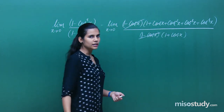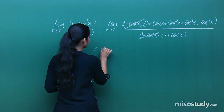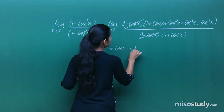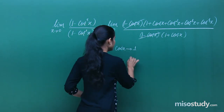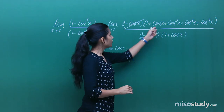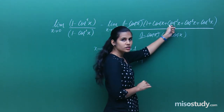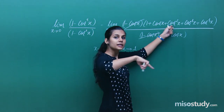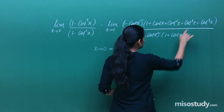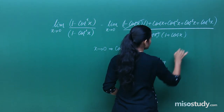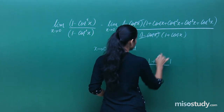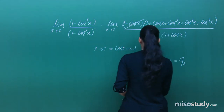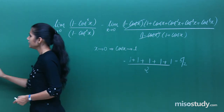Very clearly the (1 minus cosx) factor gets cancelled. As x approaches 0, cosx approaches 1. So the limit becomes (1 + 1 + 1 + 1 + 1) upon (1 + 1), which is 5 by 2. So you basically get 5/2 as your limit.